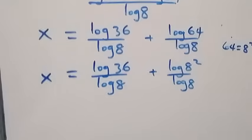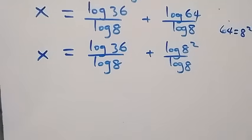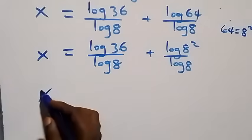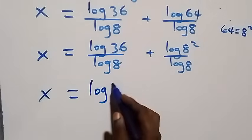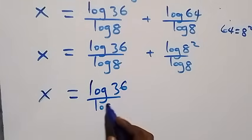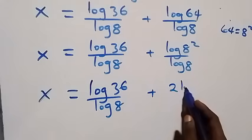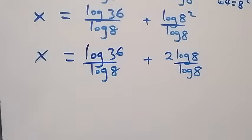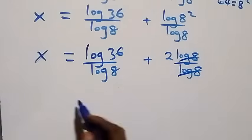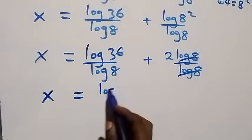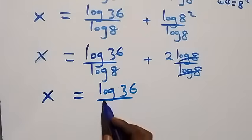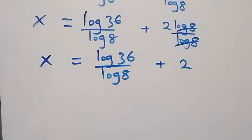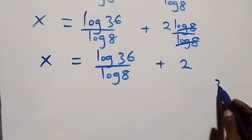Here we apply the power law of logarithm again. Since 64 is 8 squared, we have 2 log 8 over log 8, and log 8 cancels each other, leaving 2. So x equals log 36 over log 8 plus 2.